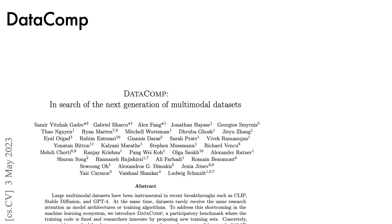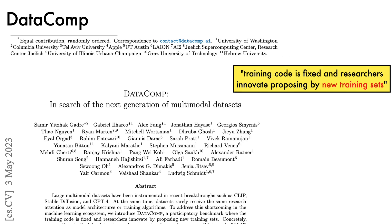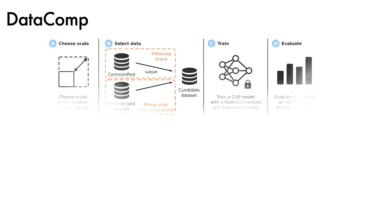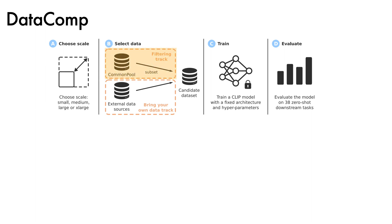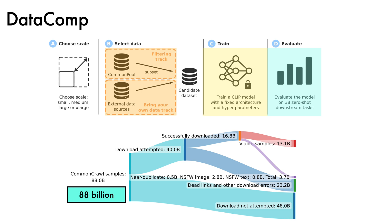Datacomp is a participatory benchmark where the training code is fixed and researchers innovate by proposing new training sets. This is a collaboration from many institutions, including, somewhat intriguingly given the nature of the research, Apple. The authors explore regimes ranging from 4 to 40,000 GPU hours on their A100 cluster. After choosing a scale, participants either propose a filtered subset from Common Crawl or bring their own external data. This dataset is used to train a CLIP model with fixed hyperparameters, evaluated on downstream tasks. At large scale, the authors start from 88 billion Common Crawl samples; after downloads and filtering for NSFW and near-duplicates, 13.1 billion viable samples are obtained.